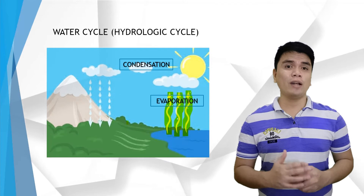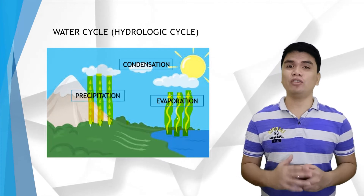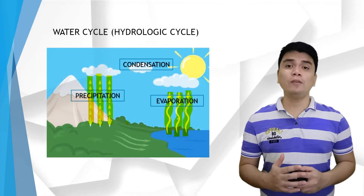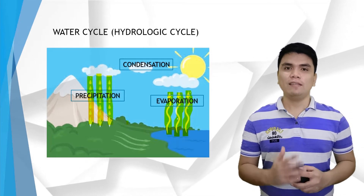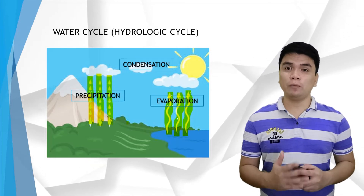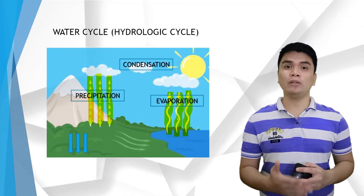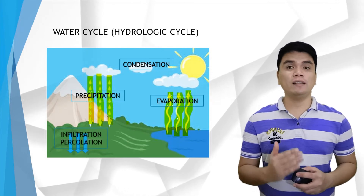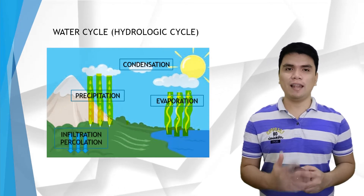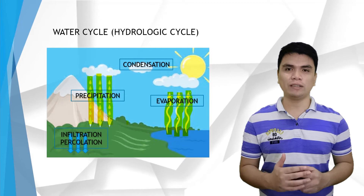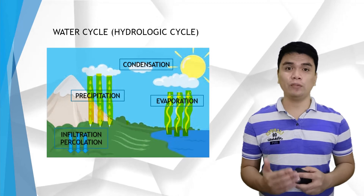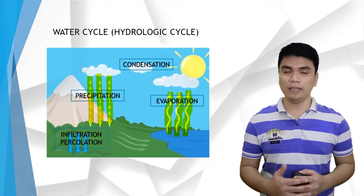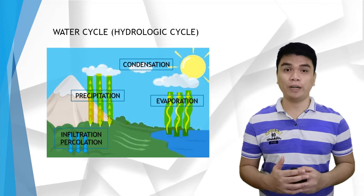Then, the water pours down as precipitation due to the wind or temperature change. As water precipitates, some of it is absorbed by soil in a process called infiltration. The water seeps down and increases the level of the groundwater table and runs to streams, lakes, and other bodies of water in a process called percolation.